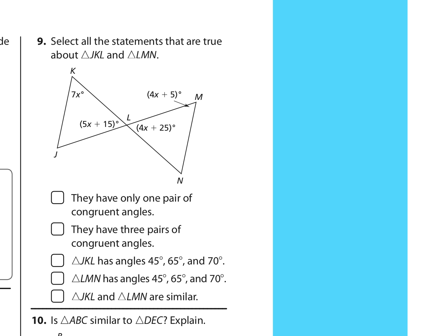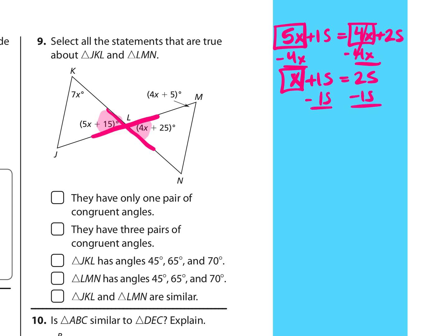Number 9. Select all statements that are true about triangle JKL and triangle LMN. The first one says they have only one pair of congruent angles. I can actually figure out what these angle measures are. So let's go through and solve that. And then we can go back and answer some questions. So one thing that I notice is we have two lines that cross, which means that these two angles that are formed on opposite sides of these crossing lines are vertical and have the same measure. So I can say that 5x plus 15 is equal to 4x plus 25. And I can solve that for x. So I've got an x term on both sides. I'm going to subtract 4x from both sides. I get that x plus 15 is equal to 25. And then subtracting 15 from both sides, I find that x is 10.